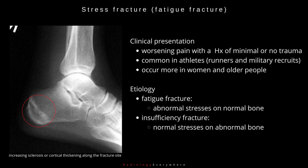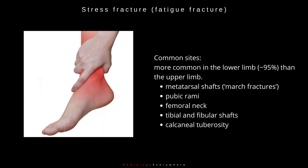Stress fractures occur more commonly in women and older people. Regarding etiology: fatigue fractures occur due to abnormal stresses on normal bone, whereas insufficiency fractures occur with normal stress on abnormal bone. Common sites of stress fractures are predominantly in the lower limb, including metatarsal shaft (especially march fractures), pubic rami, femoral neck, tibial and fibular shaft, calcaneal tuberosity, patella, and pars interarticularis of the lumbar spine.